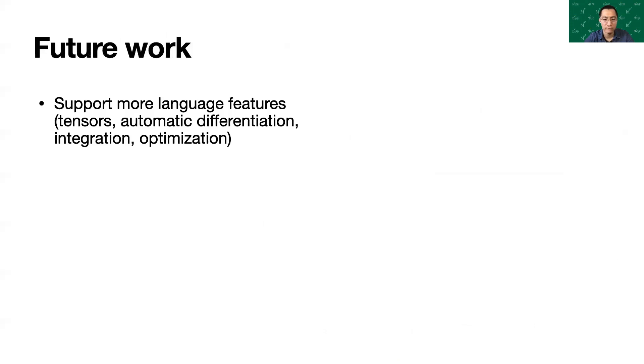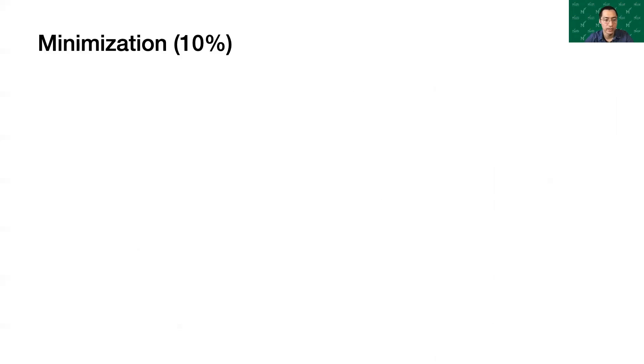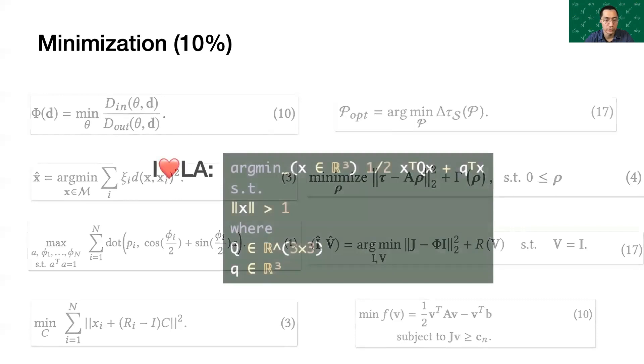In future, we plan to support more language features like tensors, automatic differentiation, integration, and optimization. There is already some related work. For example, DiffTaichi is a language for automatic differentiation of integrals with discontinuities. When analyzing the equations from SIGGRAPH 2019, we found that minimization is an important use case in papers.